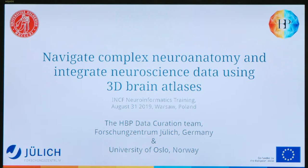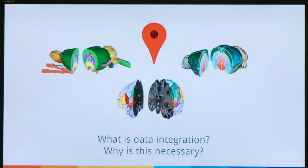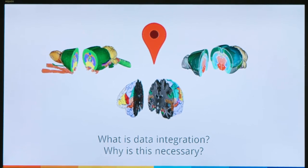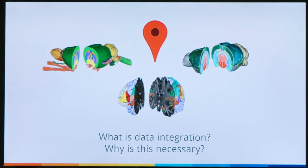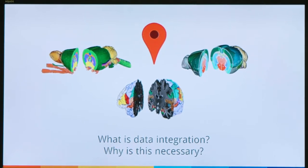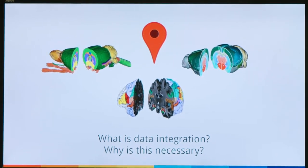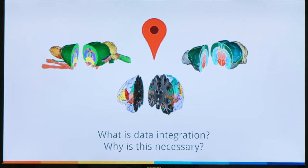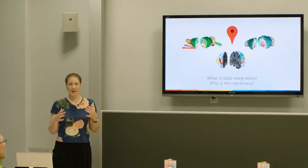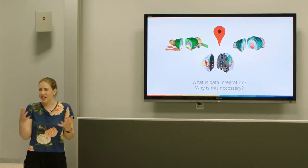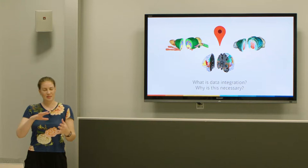We wanted to give you a little background introduction into why we're dealing with 3D brain atlases and what we're using them for. What we're aiming to do with the Human Brain Project is to integrate heterogeneous neuroscience data into one platform, making it possible to find data, access it, and have it interoperable to be able to use it together and analyze it further.